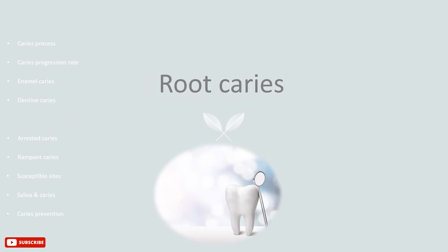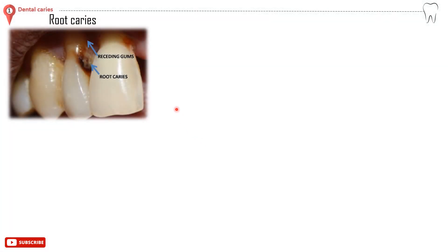Root caries. The root surface does not possess a hard protective enamel covering that is as thick and durable as the crown of the tooth; instead, it is covered with cementum. When gums recede below the enamel line or pull away from the tooth, the root surface becomes exposed. This unprotected surface is much thinner and more vulnerable to tooth decay. Note that root caries can only occur when the root of the tooth is exposed through gum tissue recession or loss of attachment between gums and tooth roots.